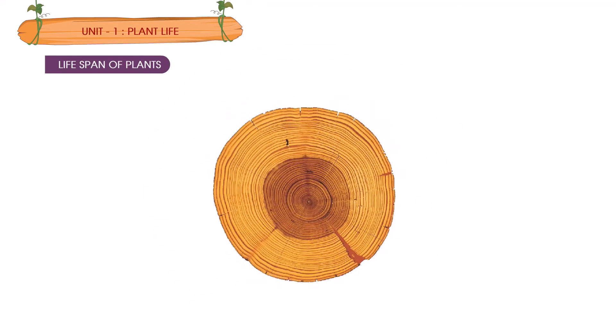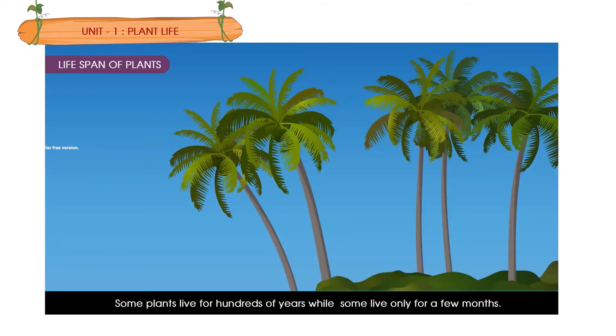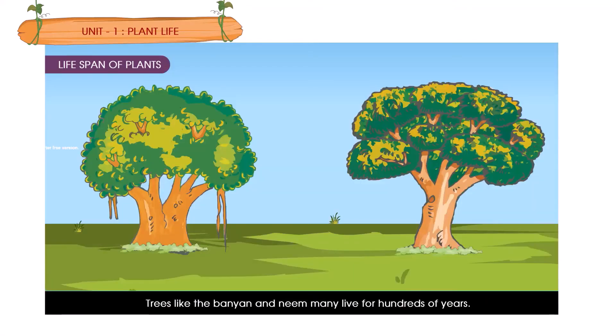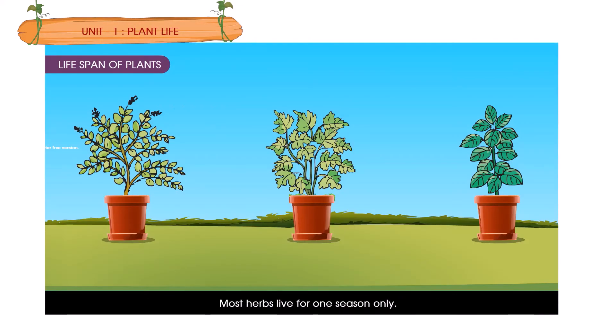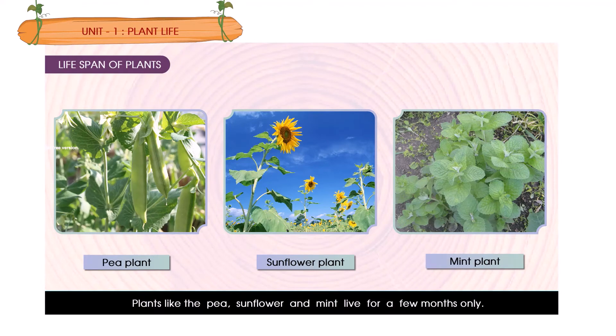Lifespan of plants. Some plants live for hundreds of years while some live only for a few months. Trees like Bunyan and Neem live for hundreds of years. Most herbs live for one season only. Plants like Pea, Sunflower and Mint live for a few months only.